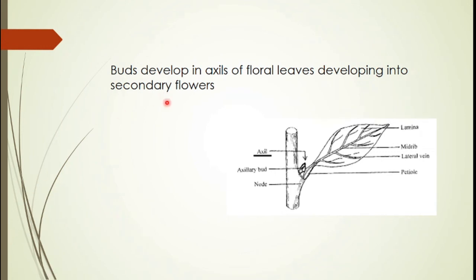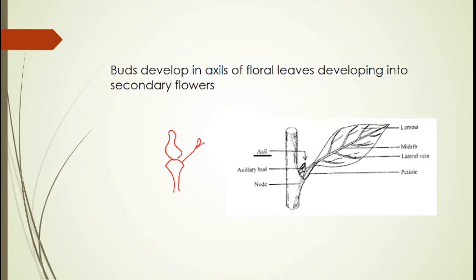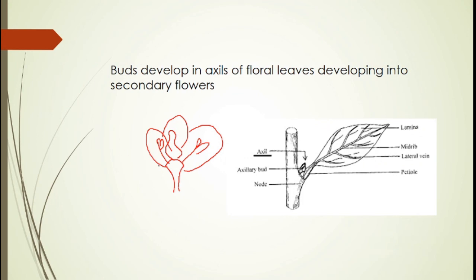In some cases, the thalamus bearing the different floral organs starts producing buds in the axils of those floral organs. So in the axils of the corolla, secondary flowers may develop — flower buds form in their axils and develop into secondary buds — which is similar to bud formation in the axils of leaves.